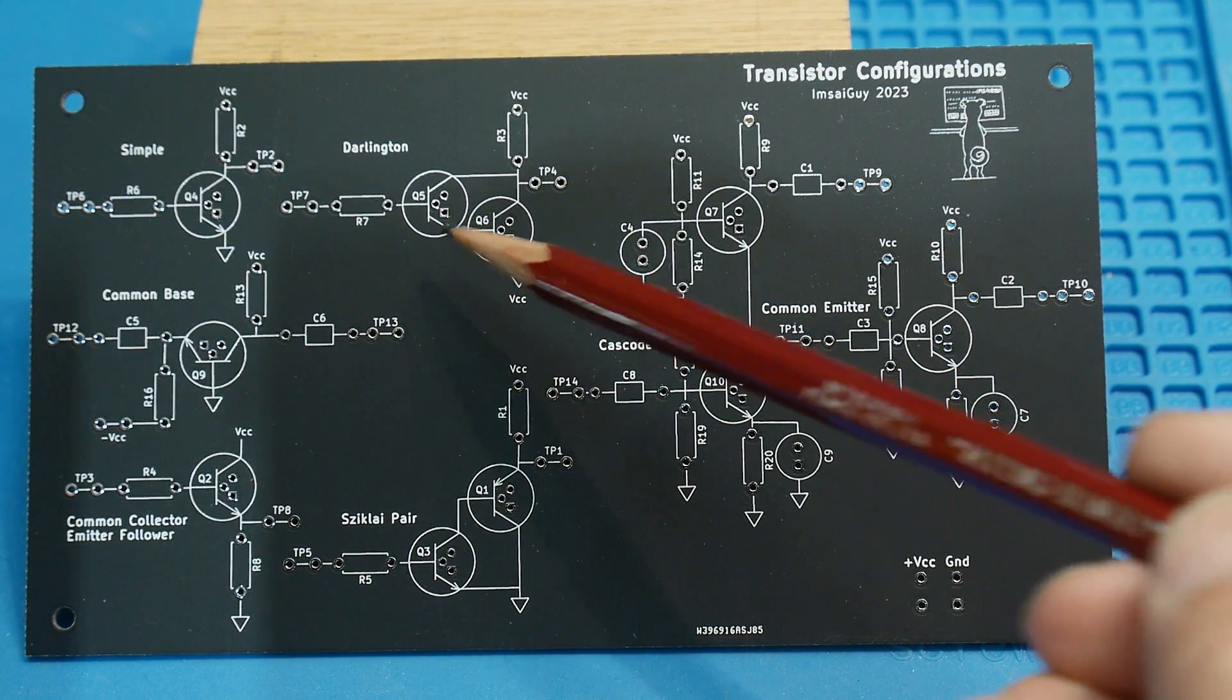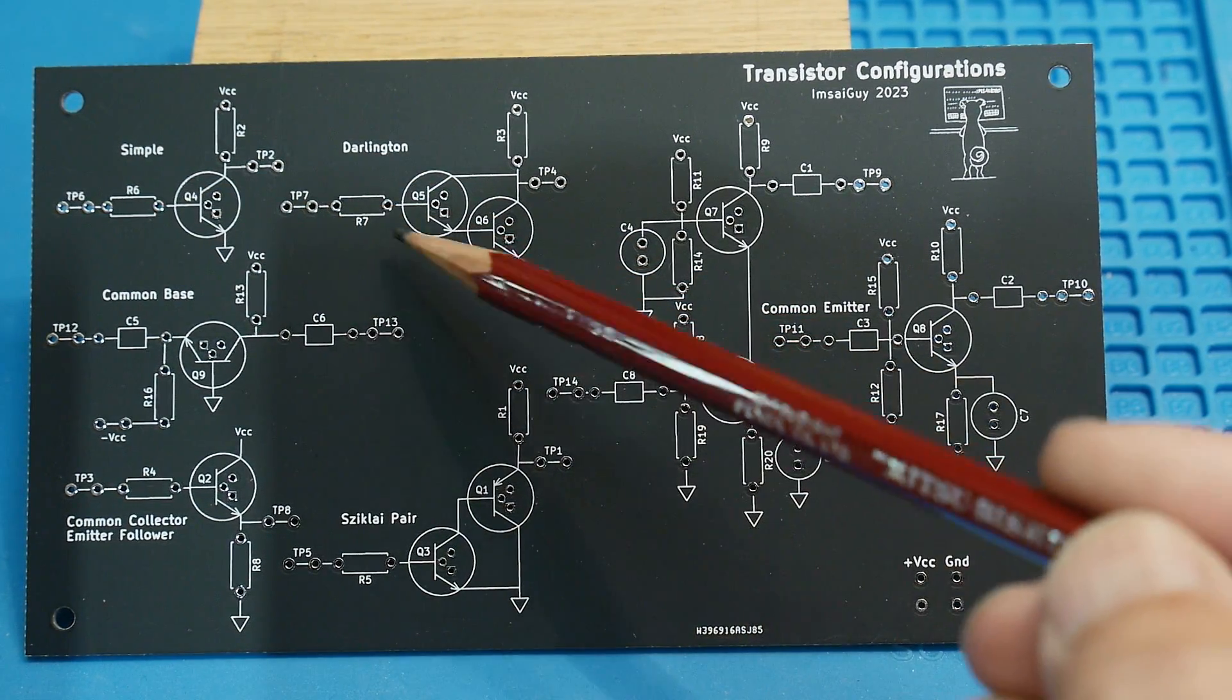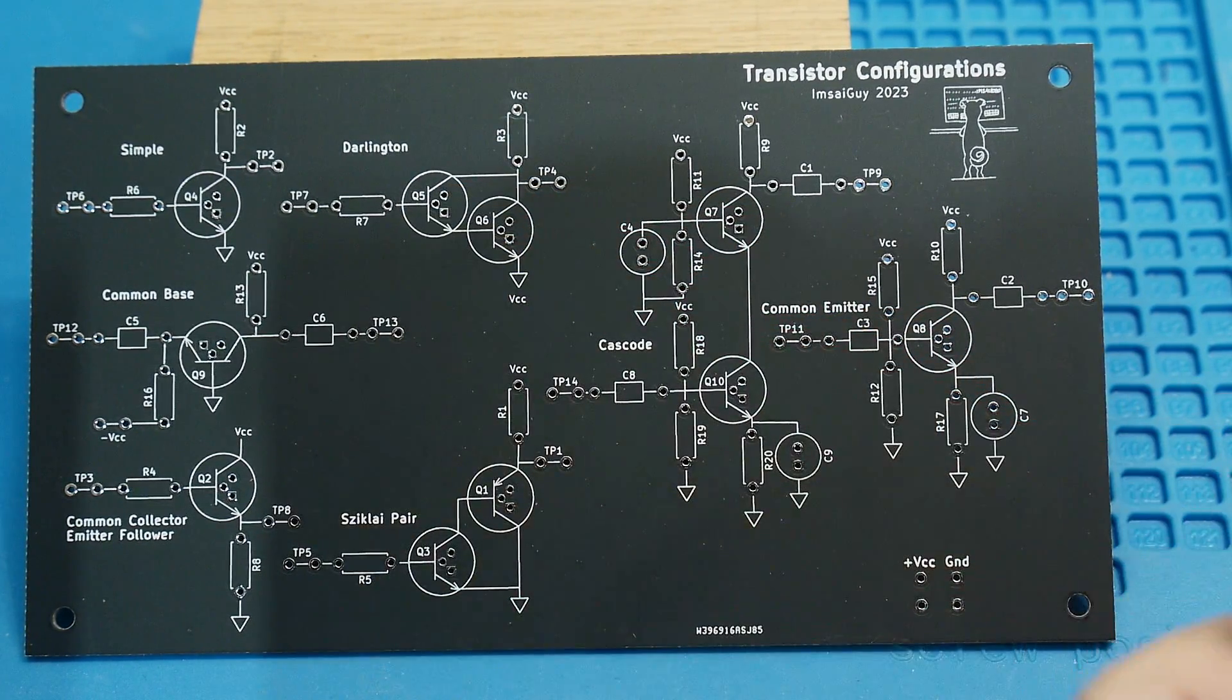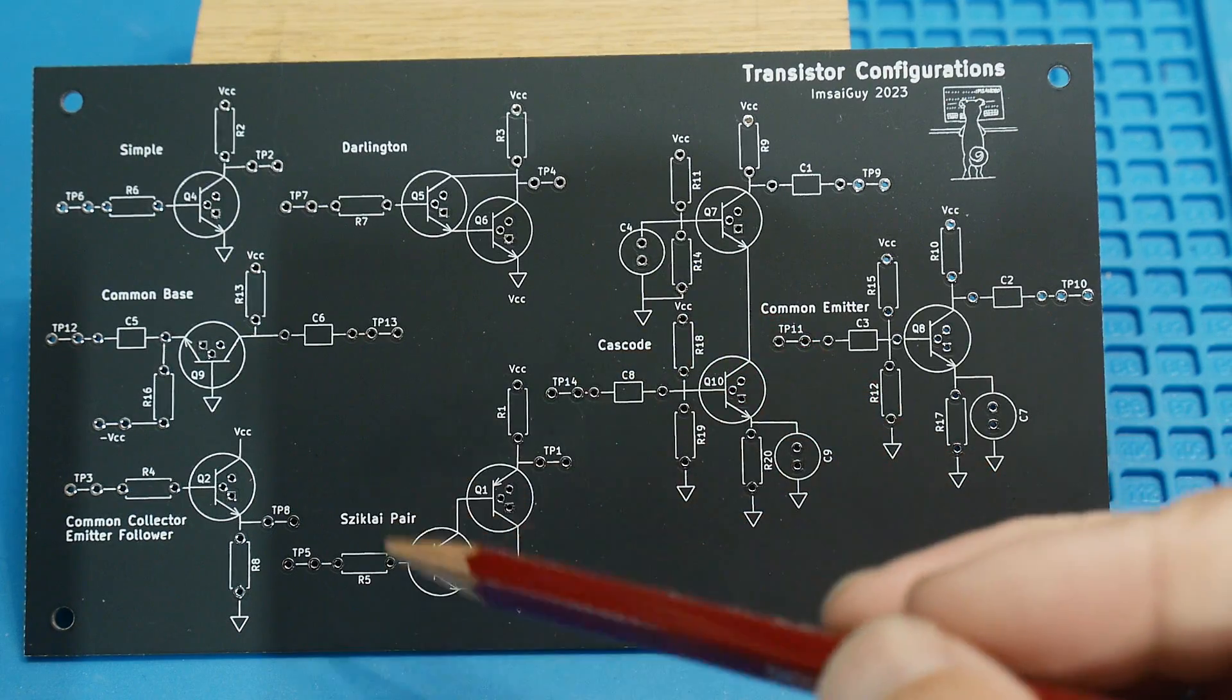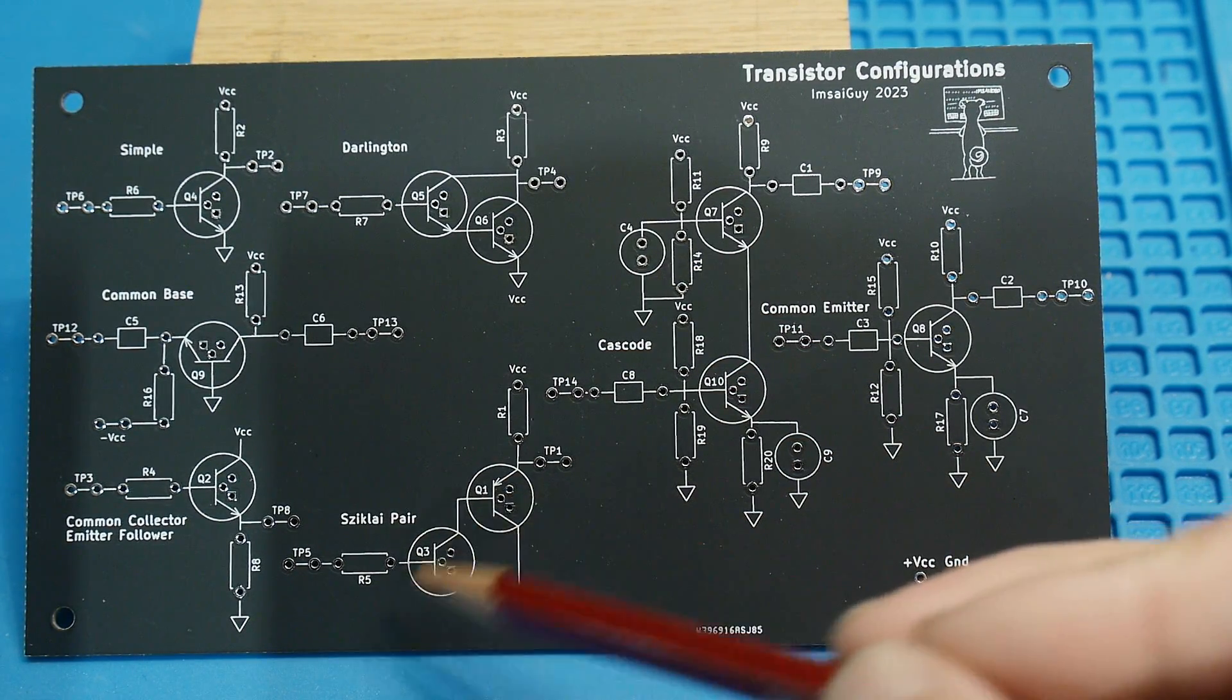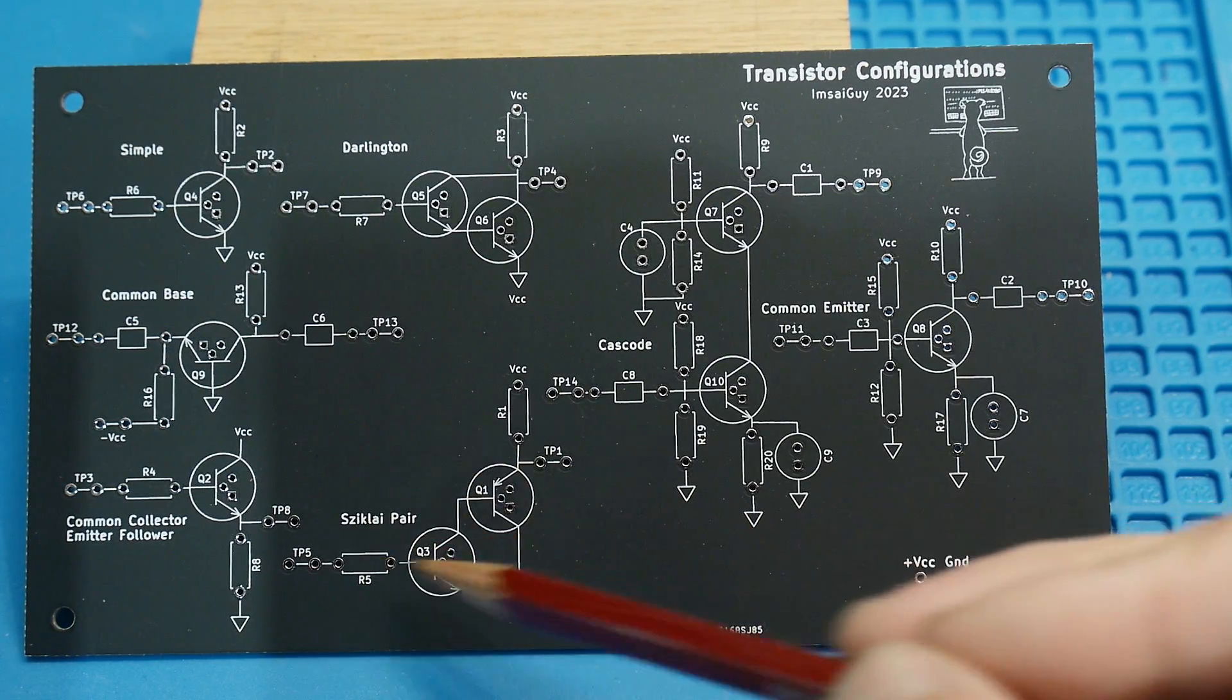The only other voltage that you need to worry about is this over here. There's a minus VCC as well for the common base amplifier. You need a negative voltage. Otherwise everything else just runs off of positive ones. So here's the simple one. Here's the Darlington version of that. So if you need more gain, there's a simple NPN-NPN Darlington. There's also the Sziklai pair down here, which uses that PNP.